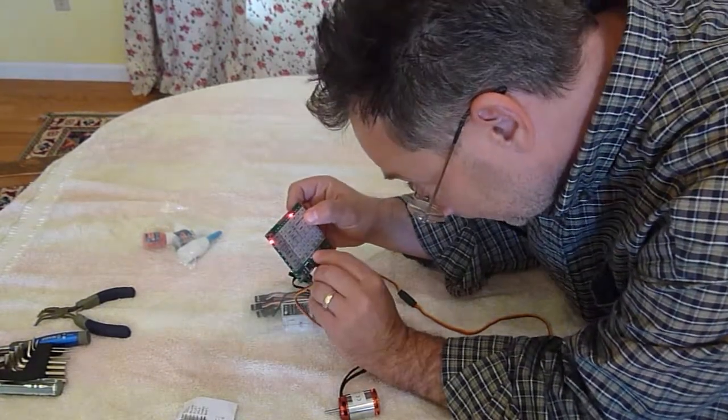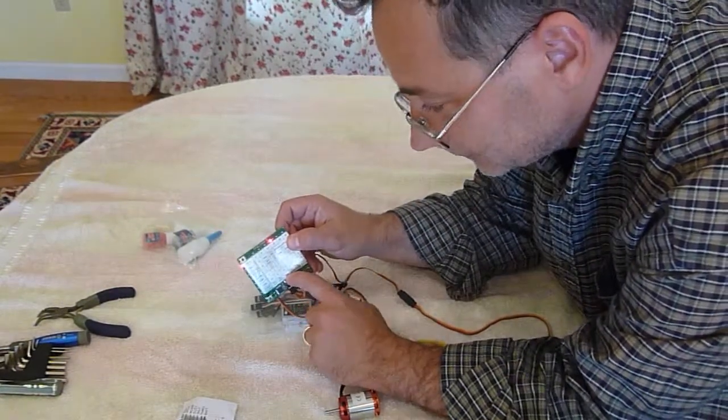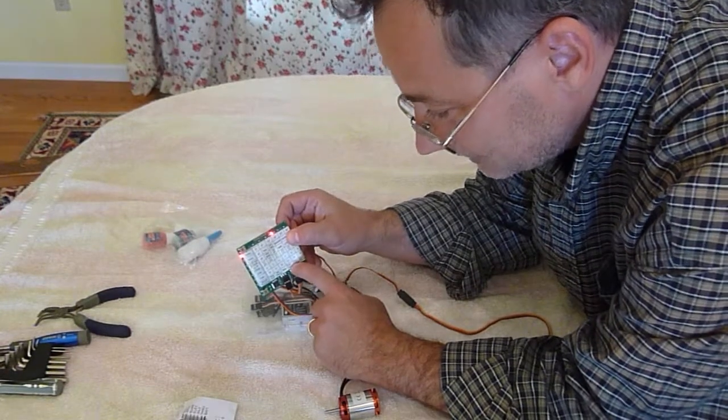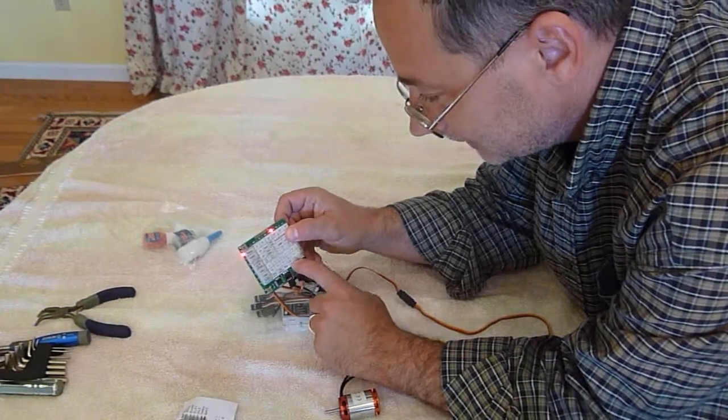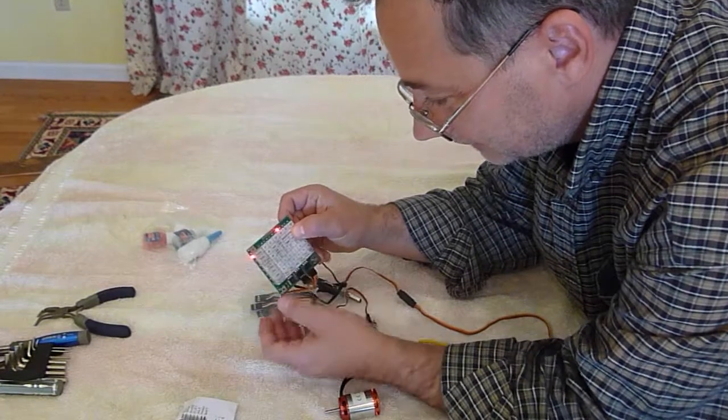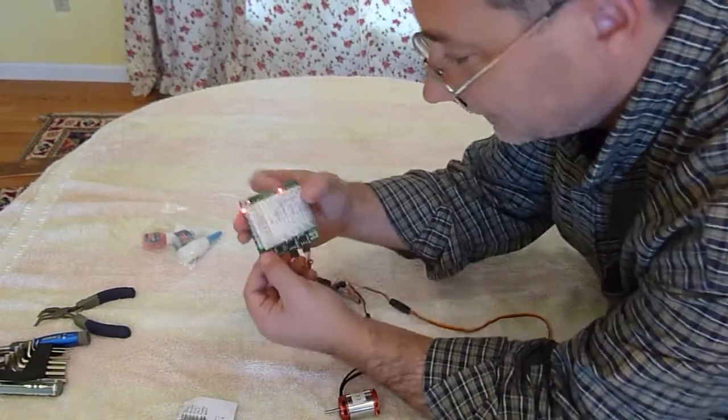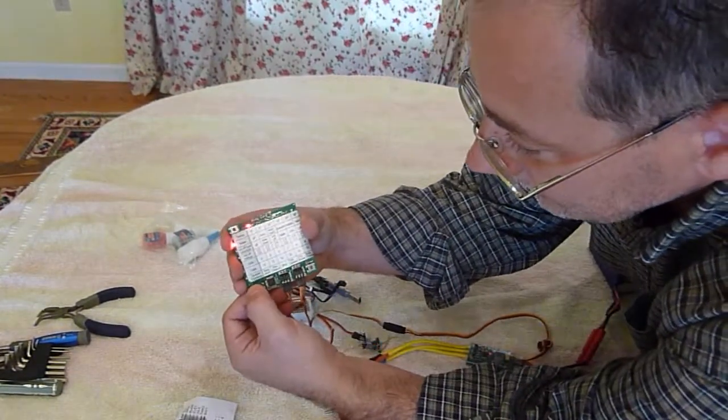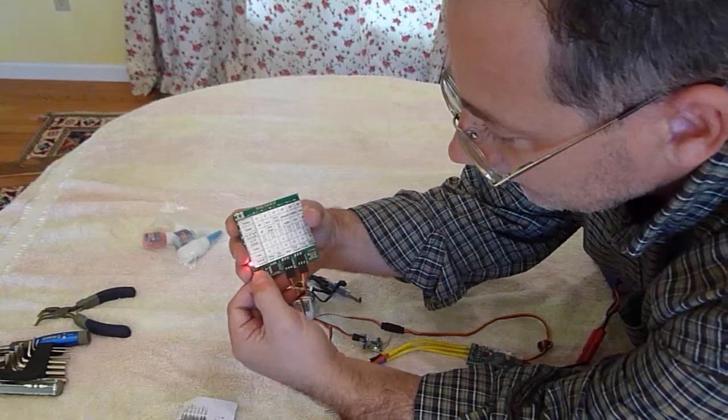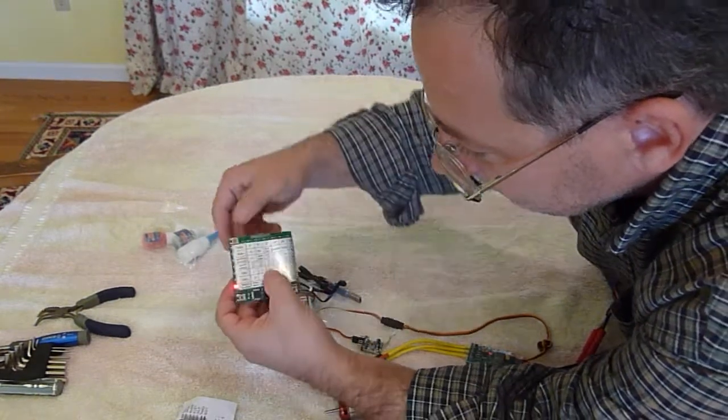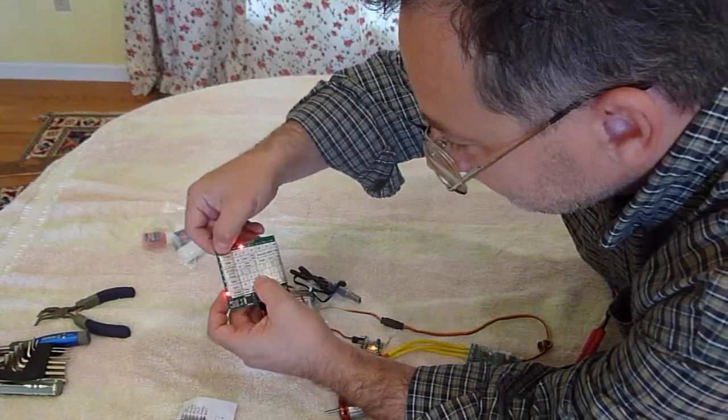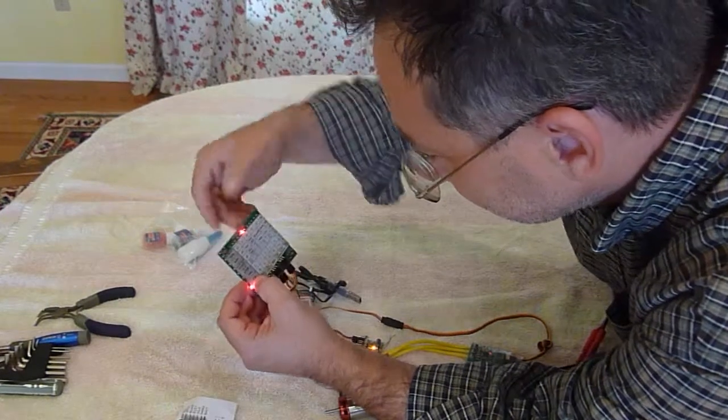So right down here is throttle stop and this one is full throttle. So first I want to set throttle stop. So I come down right here. Now I go across. See that light there? That's on stop.